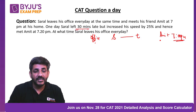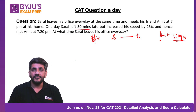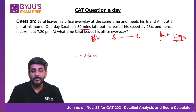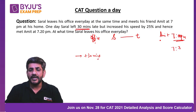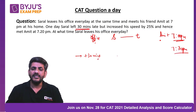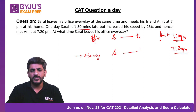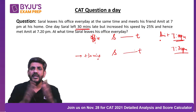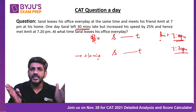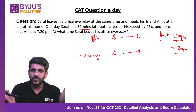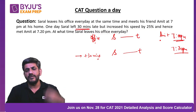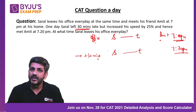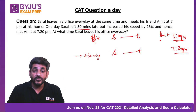He started 30 minutes late on this day. So at his normal speed, he would have reached Amit's home at 7:30 PM — again taking the same time T to reach there. But today he increased his speed.